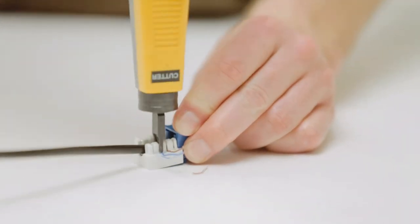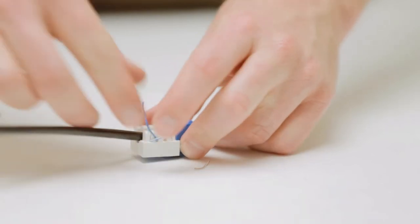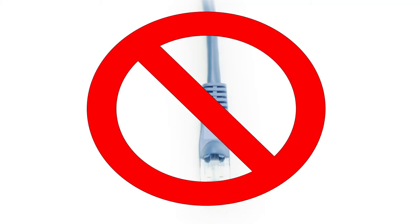Unlike stranded cable, solid Cat5e can be punched down to jacks or patch panels. It is not recommended to be used as a patch cable.